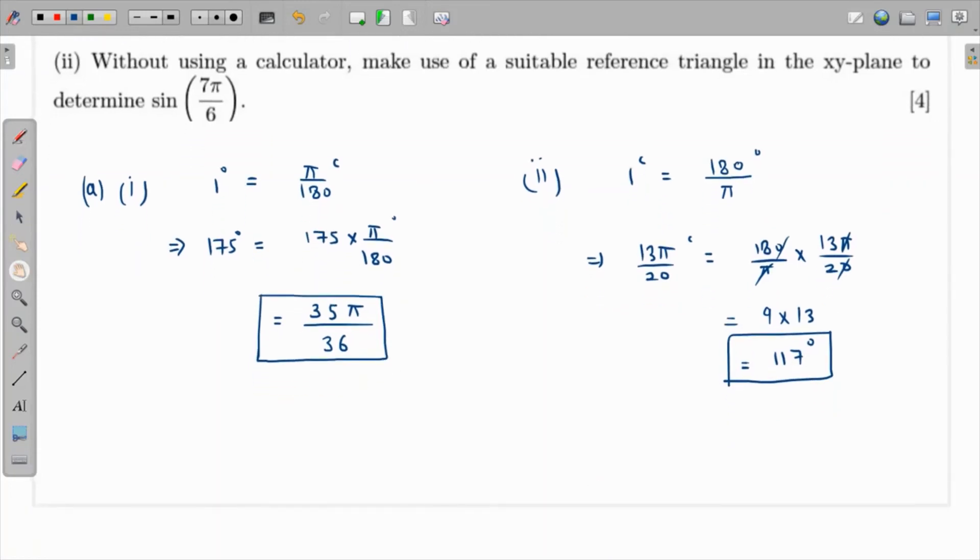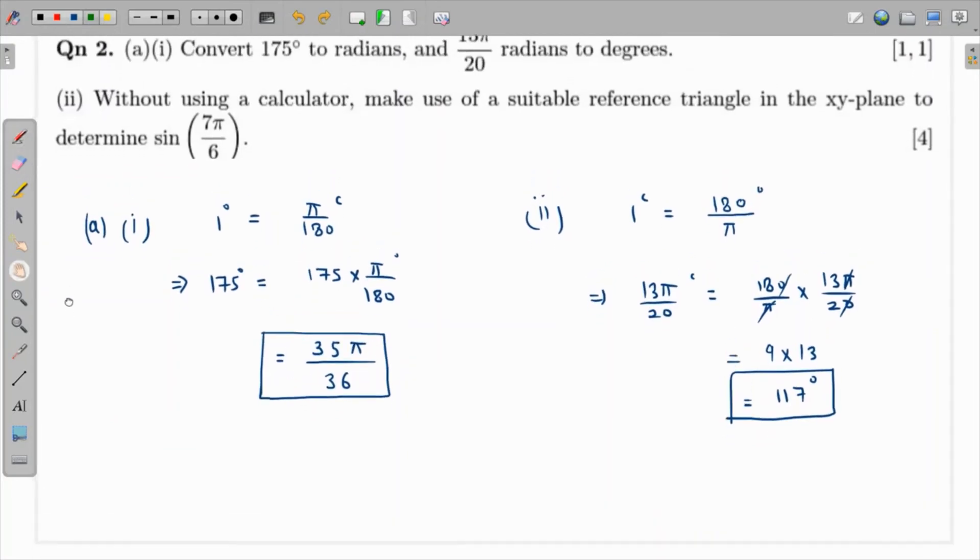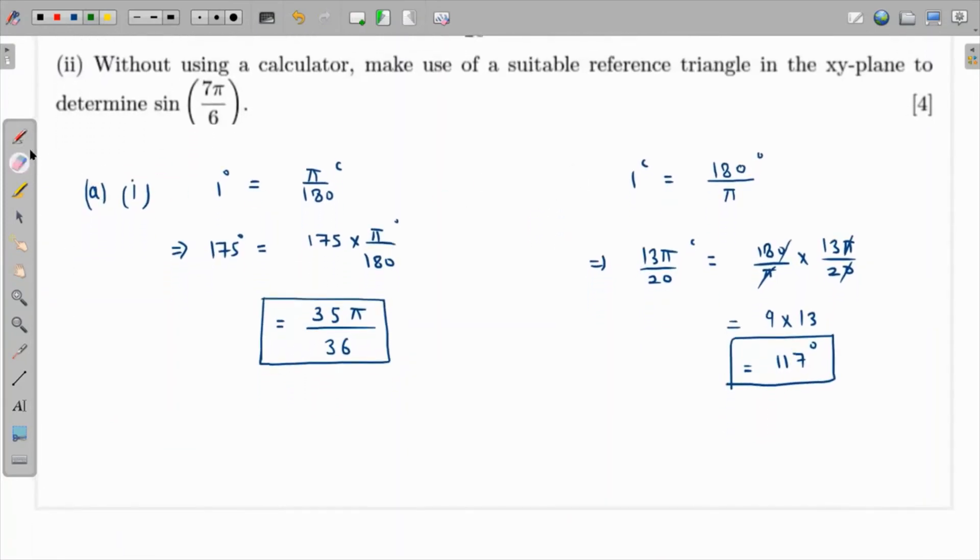Part (ii) asks us to find sin(7π/6) without using a calculator. sin(7π/6) can be written as sin(π + π/6). Since π + π/6 is in quadrant 3, where sine is negative, this equals -sin(π/6). We know sin(π/6) = 1/2, so sin(7π/6) = -1/2. These are the answers to both parts.